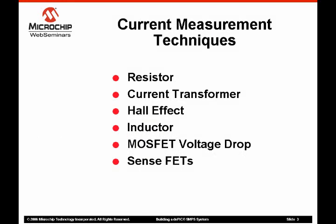Resistors are the most common and lowest cost method for current sensing. Typically, a low ohmage resistance is inserted in the current path, and the voltage drop across the resistor is measured and the current is calculated. This method dissipates power, reduces the system efficiency, and the associated voltage drop can affect the output voltage regulation. If a measured node is at a high voltage potential, then additional circuitry may be required for voltage translation.